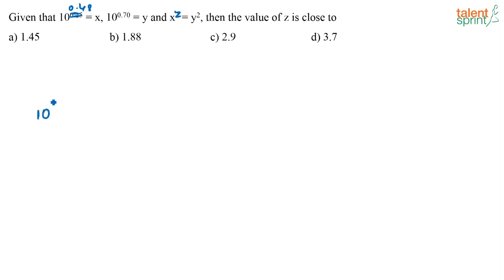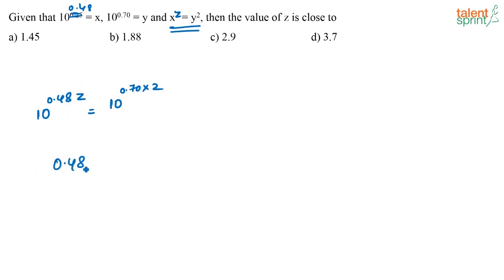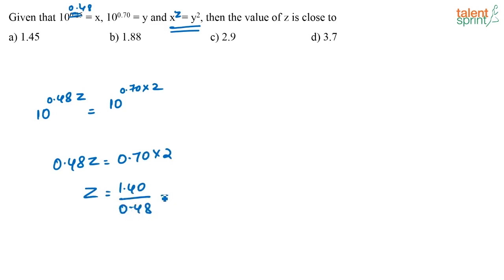So I can say 10 to the power of 0.48 into z is equal to 10 to the power of 0.70 into 2, because they are saying x to the power z is equal to y squared. If I equate the powers, I get 0.48z is equal to 0.70 into 2. So z is equal to 1.40 by 0.48, which is equal to 2.9 approximately.